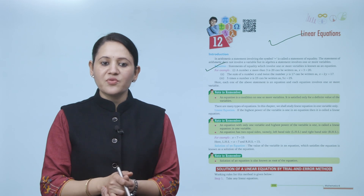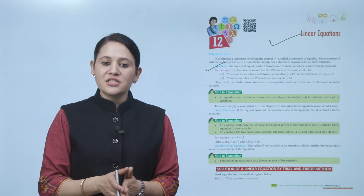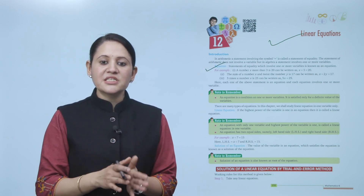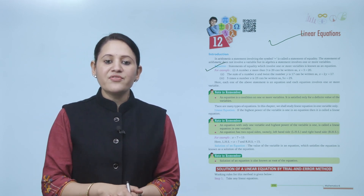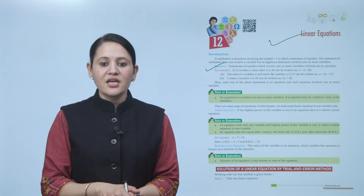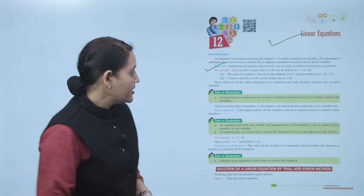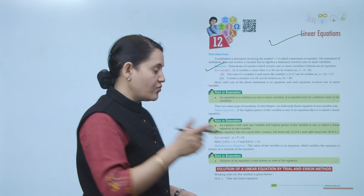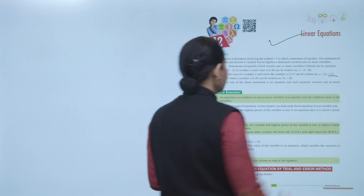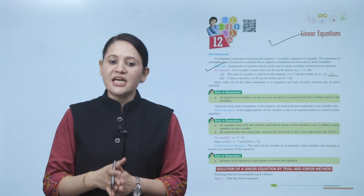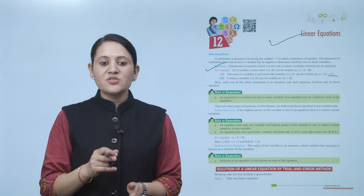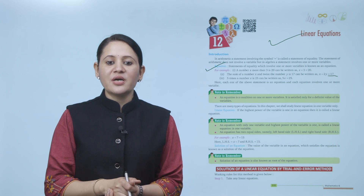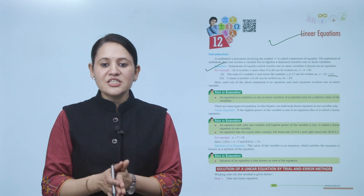For example: a number X is more than 3, that is X plus 3 equals 20. The sum of number X and twice the number Y is 17, written as X plus 2Y equals 17. Five times the number X equals 25, written as 5X equals 25. Each of these statements is an equation involving one or more variables.